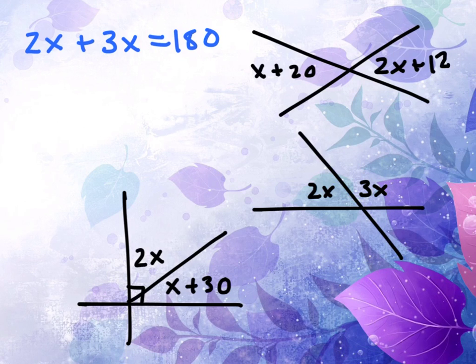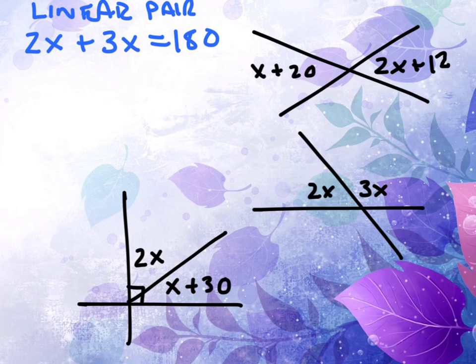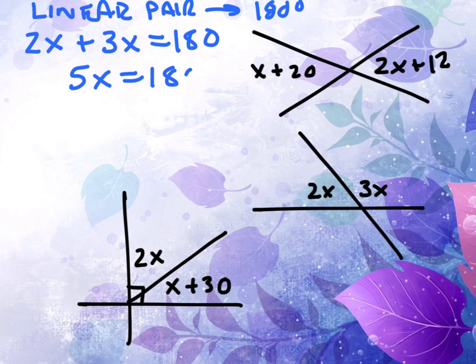Why is that true? It's a linear pair. Linear pairs are supplements. They add up to 180 degrees. So you and I would just solve 5x equals 180, x equals, goes in 3 and 6 more. That would be a total of 36.